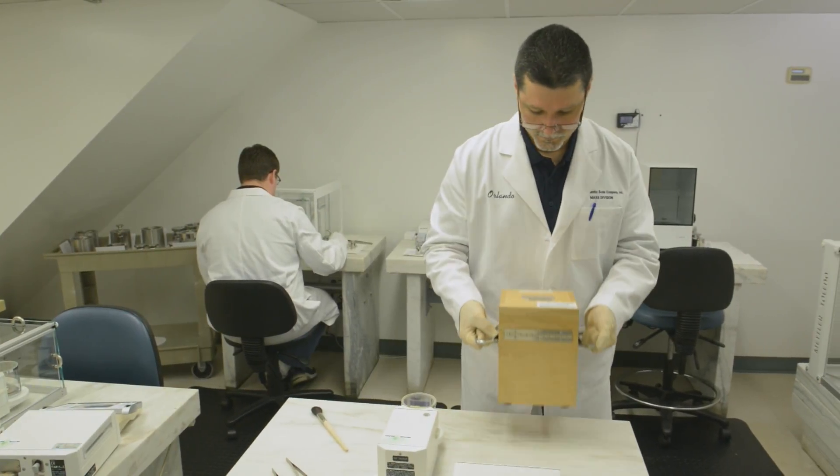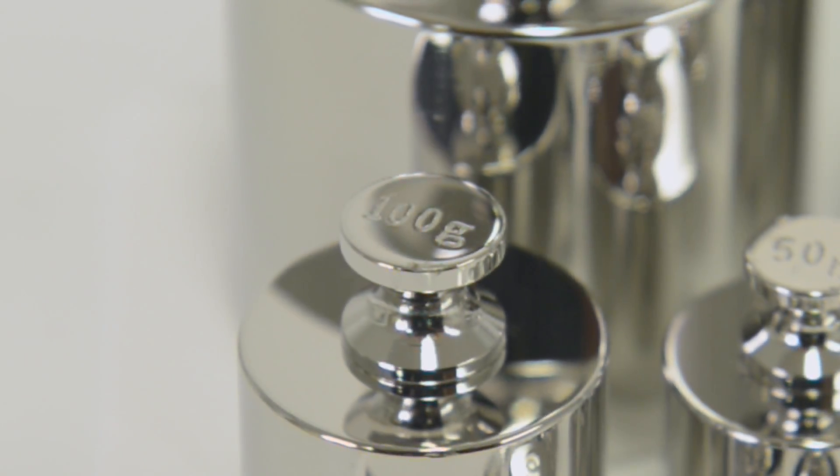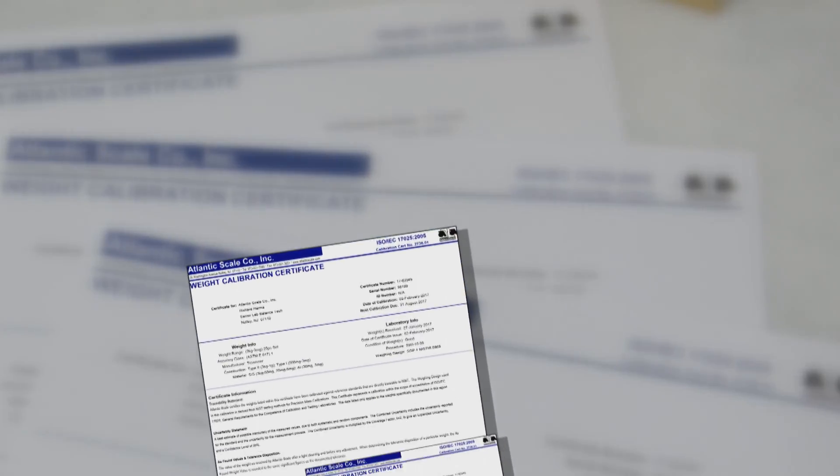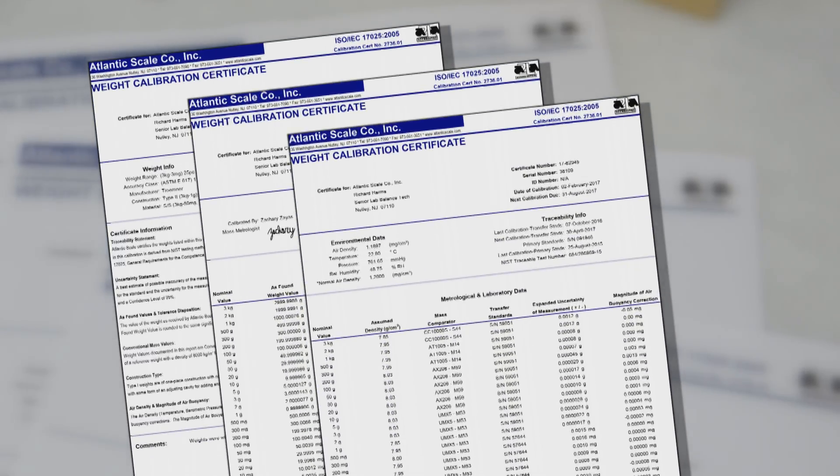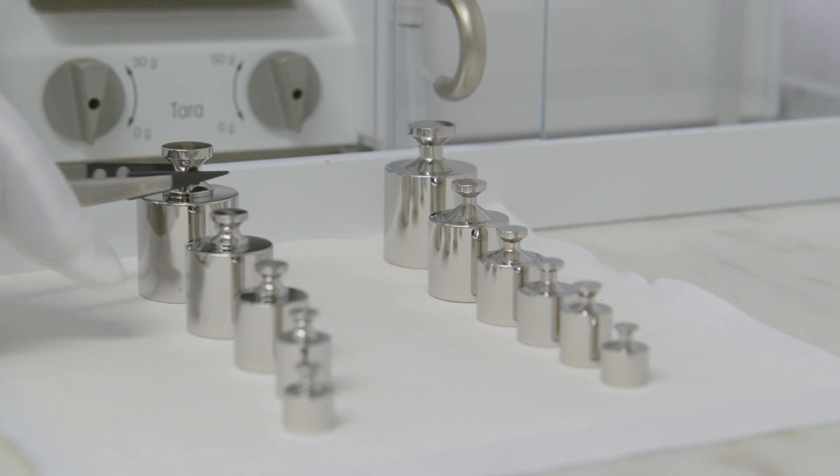This gives the capability for calibrating ASTM class 1 and even class 0 precision weights. NIST traceable calibration certificates providing detailed calibration data are furnished with every weight calibration.